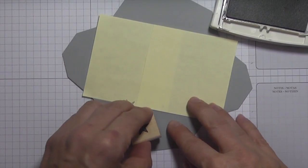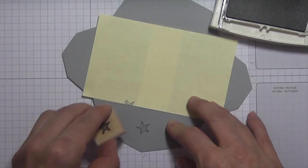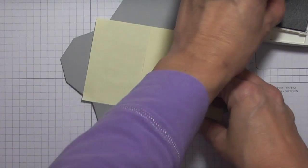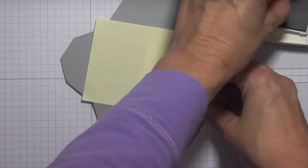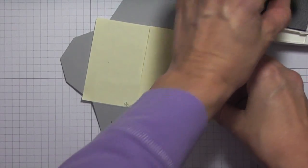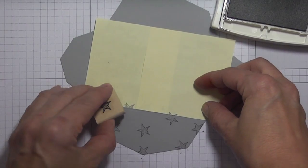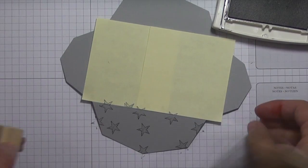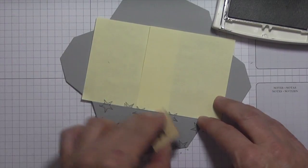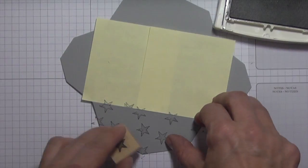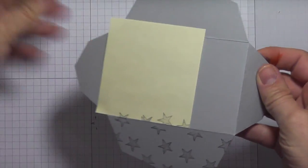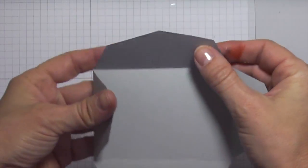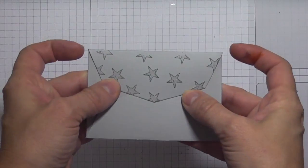You're just going to randomly stamp on this flap. You can stamp off so it looks more organic, and just however many you think looks good. One more right here, and down here. Okay, that looks good. So when we close it, it will look like so.